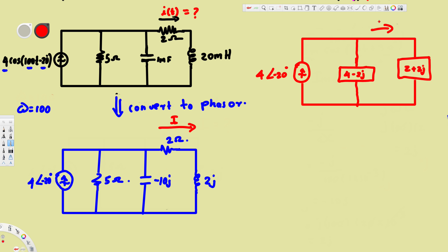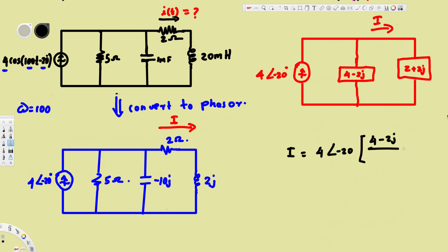To find the current through the 2 ohm resistor we use current division. We take the current source 4∠-20° and multiply by the other impedance, 4 - 2j, on top, divided by the sum of both impedances: (4 - 2j) + (2 + 2j). Calculating this gives us 2.98∠-46.57°, which is our phasor current.